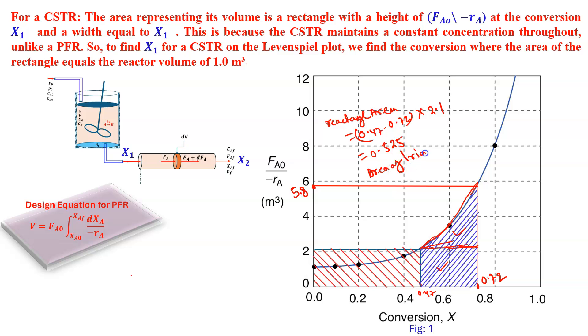Area of triangle will be half into 0.72 minus 0.47 into this height, that is 5.8 minus 2.1. That will be 0.5 into 0.72 minus 0.47 into 5.8 minus 2.1, that will give something 0.4625.